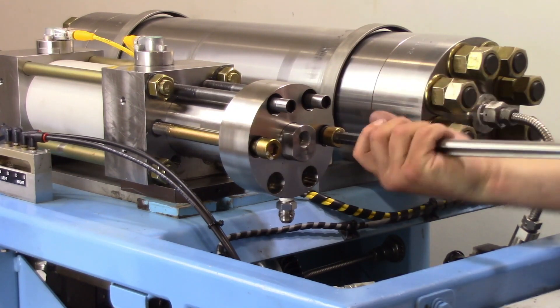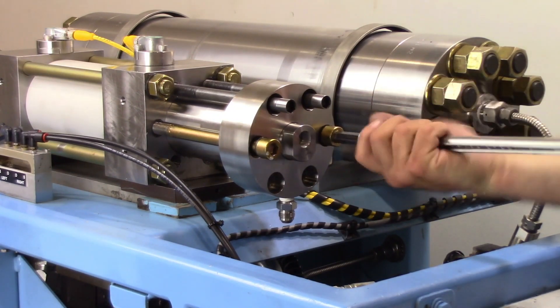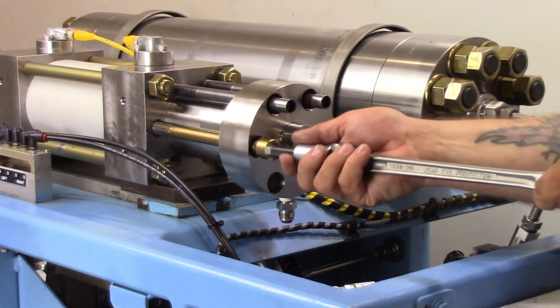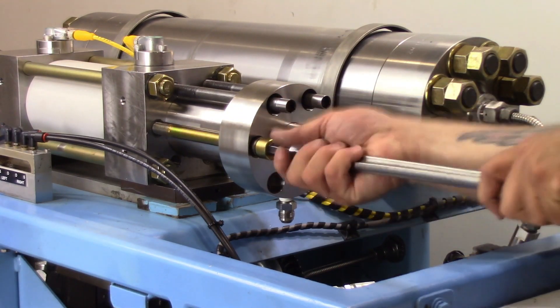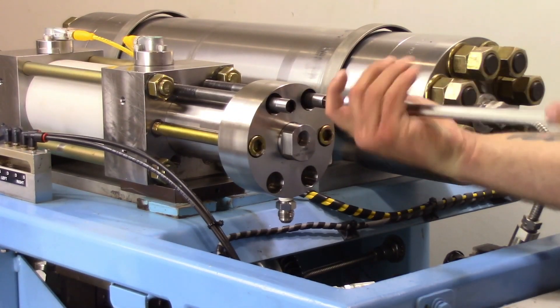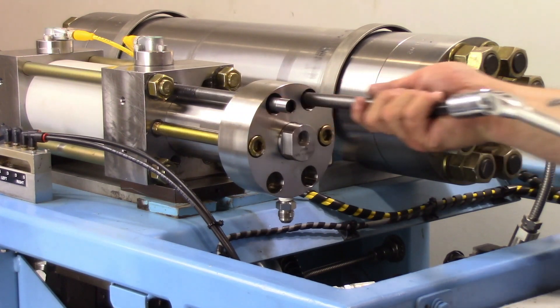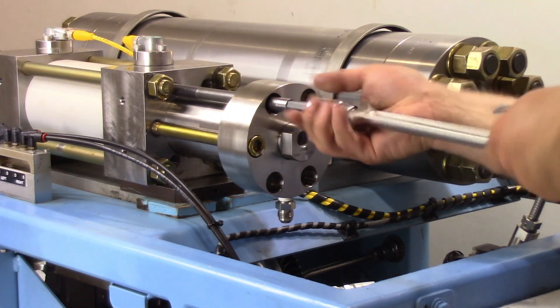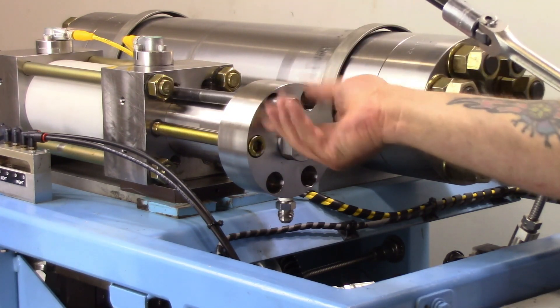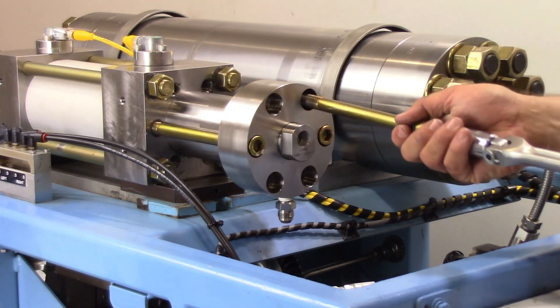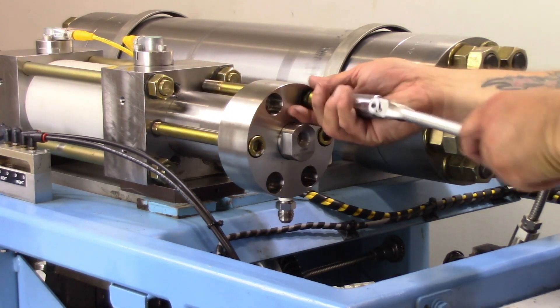Draw the high-pressure end cap into the intensifier evenly, alternating between two end cap screws. Remove end cap support studs.